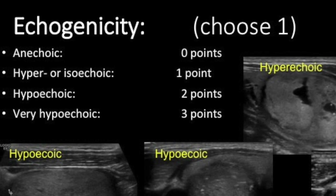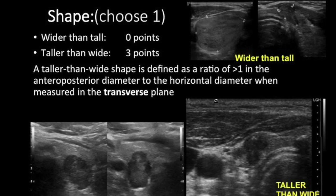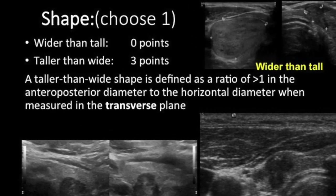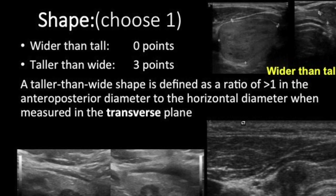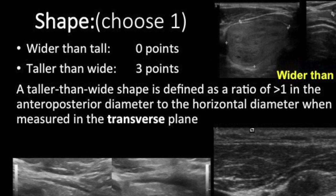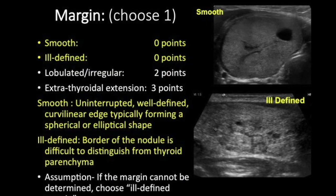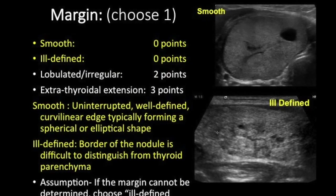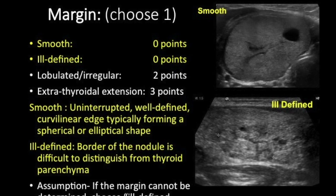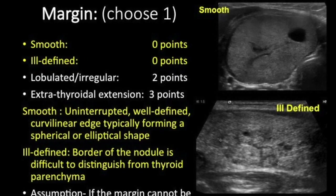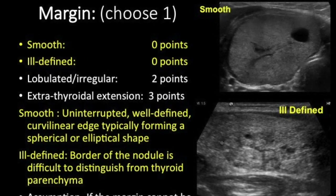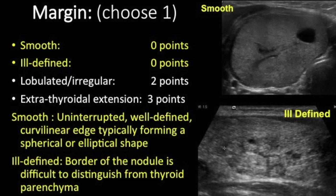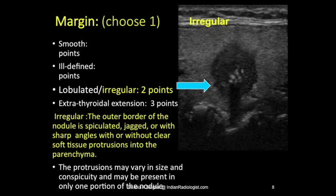For shape: if the nodule is taller than wide, we give a score of three points; wider than tall is zero. For margins: smooth or ill-defined is zero, lobulated or irregular margins is two points, and extrathyroidal extension (ETE) is three points.